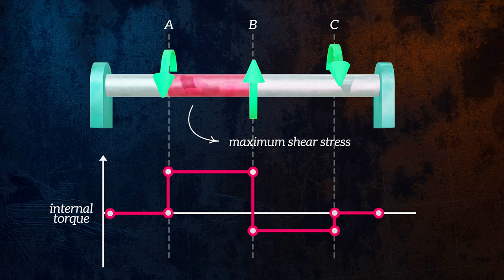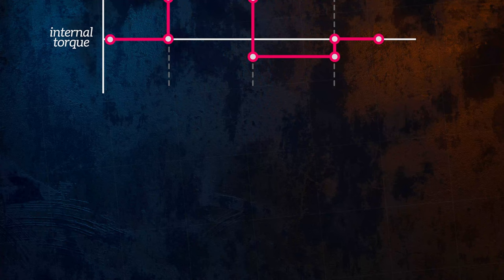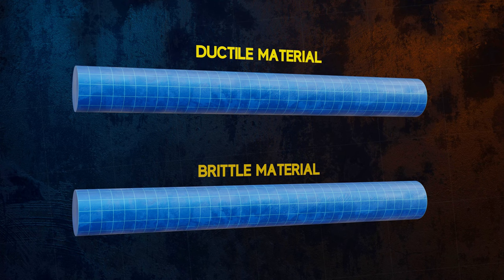I want to end the video by talking about failure due to pure torsion. If we have two bars, one made of a ductile material and one made of a brittle material, and we apply the same torque to both bars, we will observe that they fail differently.